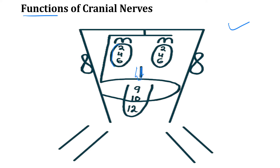Then you draw two eyes. Inside the eyes you write 2, 4, and 6, and you also draw a 3 on the eyebrows like the letter M — that's your oculomotor nerve. CN2 is your optic nerve, a purely sensory nerve responsible for vision. CN4 is your trochlear nerve, a motor nerve responsible for eye movements. And CN6 is your abducens nerve, also a purely motor nerve responsible for eye movement.